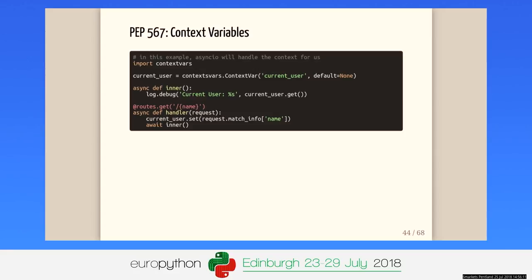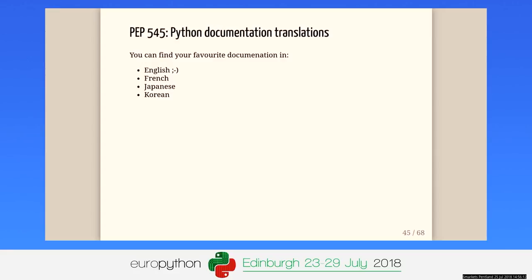For the next thing: it's just about documentation. With Python 3.7, we have the documentation in English, and now also in French, Japanese, and Korean.